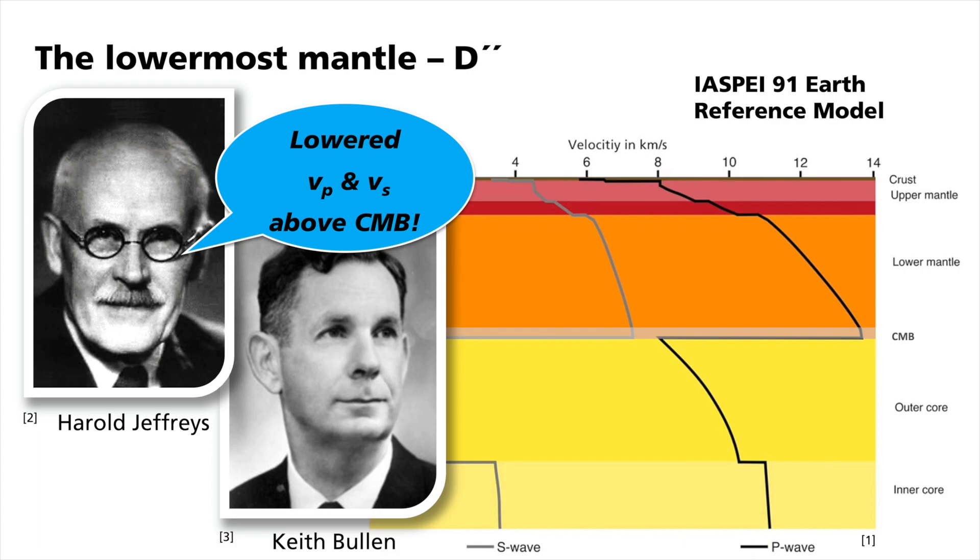After analyzing further data, Bullen found differences also in the pressure and compressibility gradients of this special layer. He called it D double prime. Hence, he noted in 1946 that D double prime is significantly different in some respects from D prime, which he called the rest of the lower mantle. Today, the global availability of large amounts of seismic data allows seismologists to investigate the nature of D double prime.